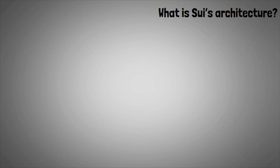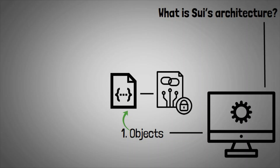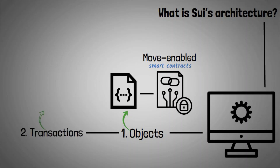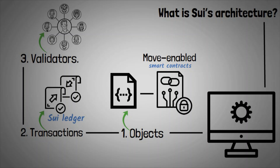According to Sway's technical documentation, the blockchain consists of three main components. First, Objects: Sway possesses programmable objects built and managed by MOVE-enabled smart contracts. Second, Transactions: transactions describe any changes and updates made to the Sway ledger. Third, Validators: the entire Sway network is handled by independent validators, each of whom runs their own instance of the Sway software on a separate machine.